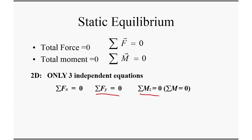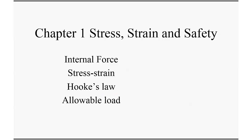Today we're going to start learning new content for this course. The first chapter will look at stress, strain, and safety. In this chapter we're going to cover mainly four key elements: first, the force inside an object — what we call internal force; second, what's stress and strain; third, Hooke's law that describes the relation between stress and strain; and fourth, the allowable load — basically how much load you can apply to a structure to keep it safe.